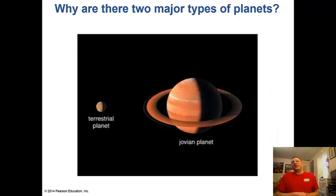We know there are two types of planets in our solar system: the terrestrial and the jovian. The terrestrial planets are Mercury, Venus, Earth, and Mars. The jovians are Jupiter, Saturn, Uranus, and Neptune - the gas giants.